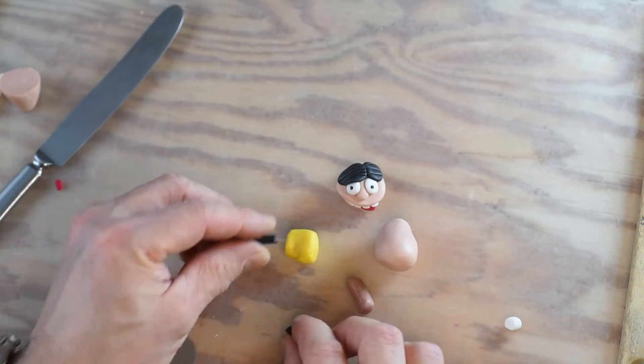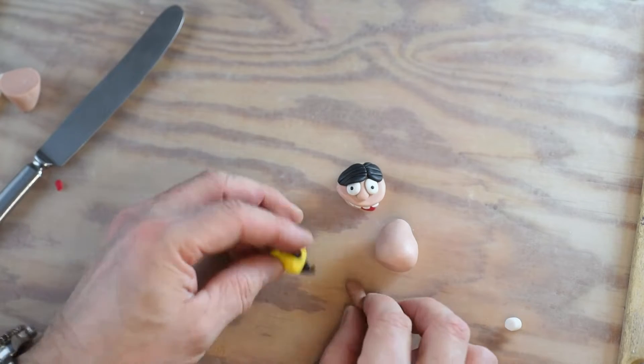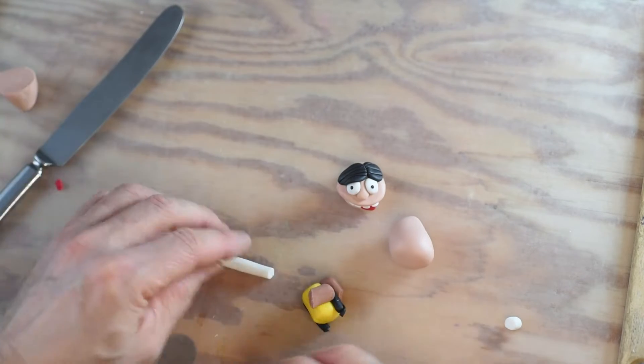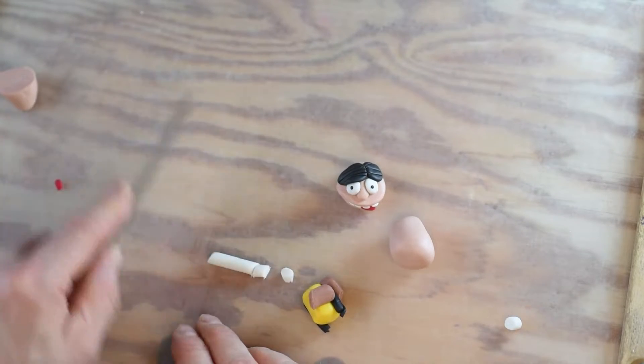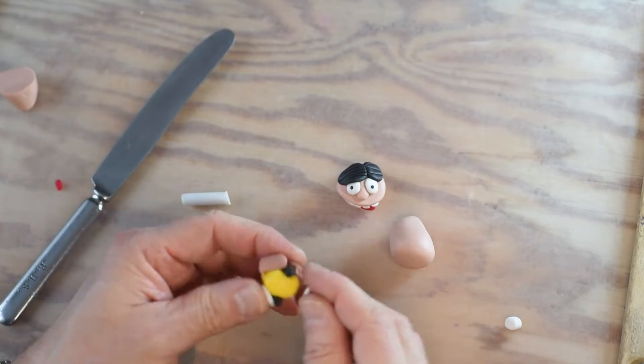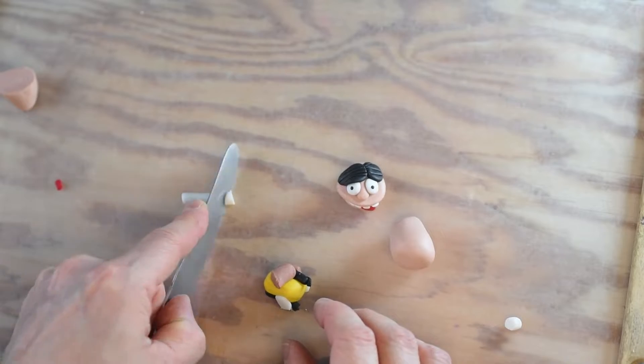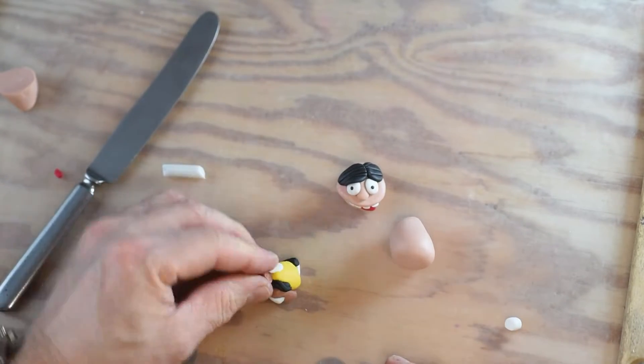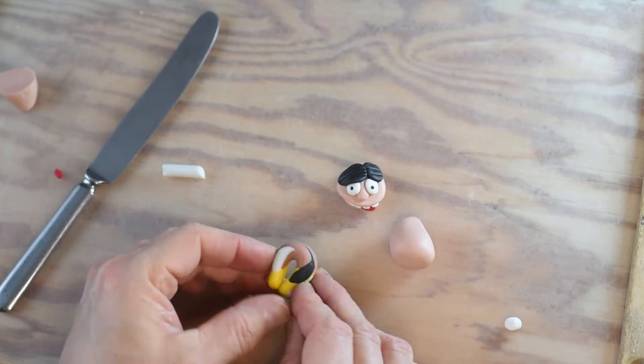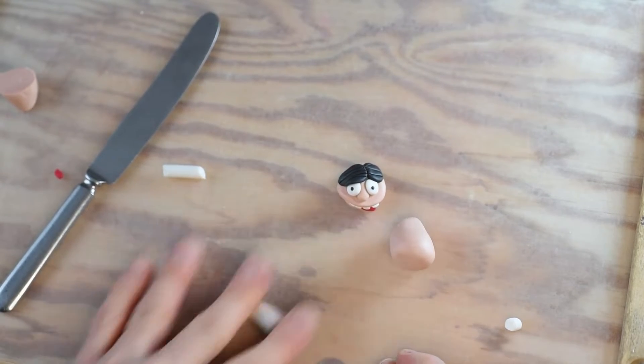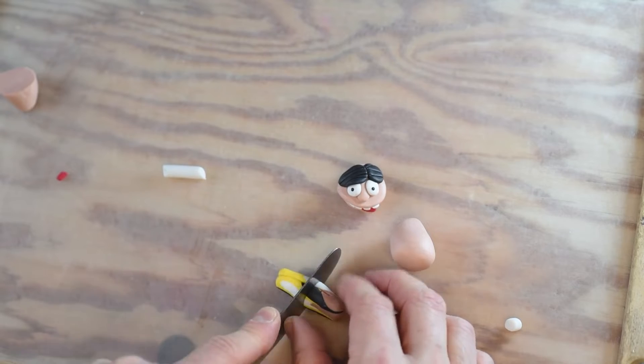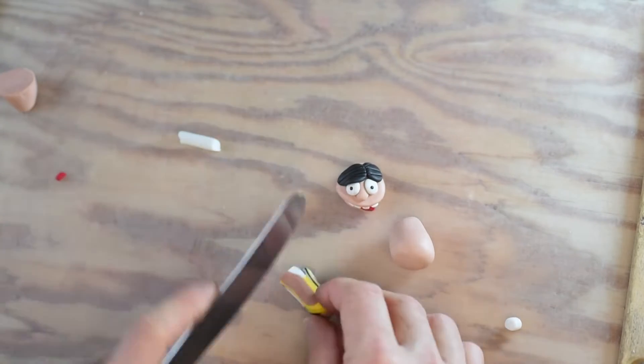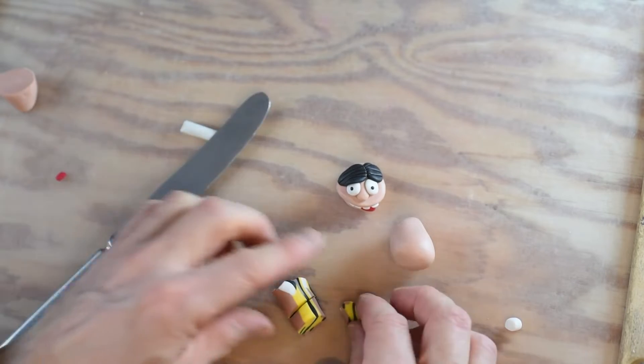I mix yellow, brown, black and white. You can of course use other colors if you want to. Just squeeze them together. Roll it, bend it and cut it. Over and over again. Until you are satisfied with the colors that you get.